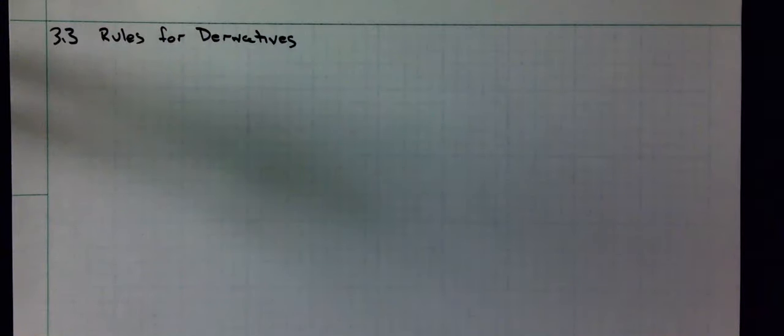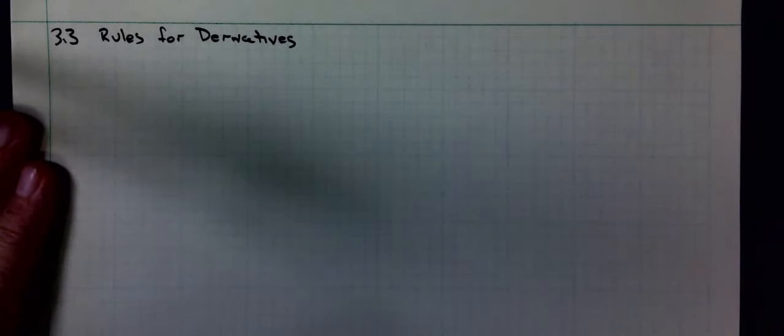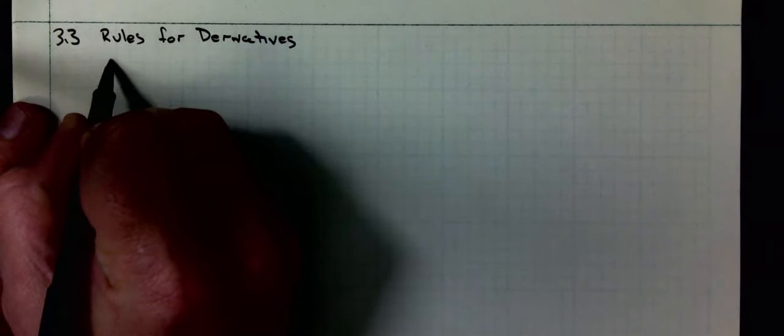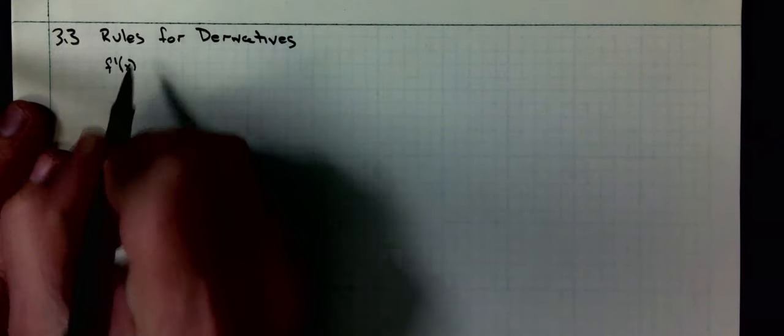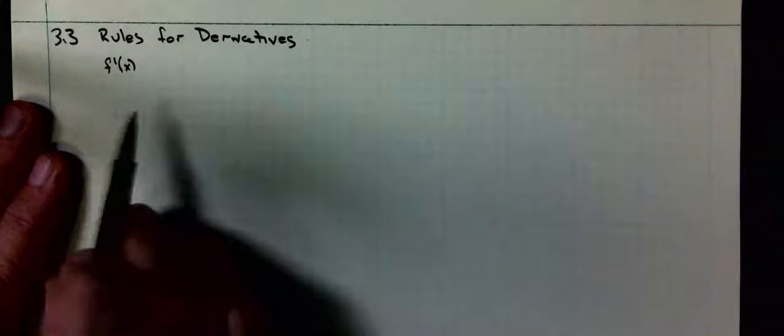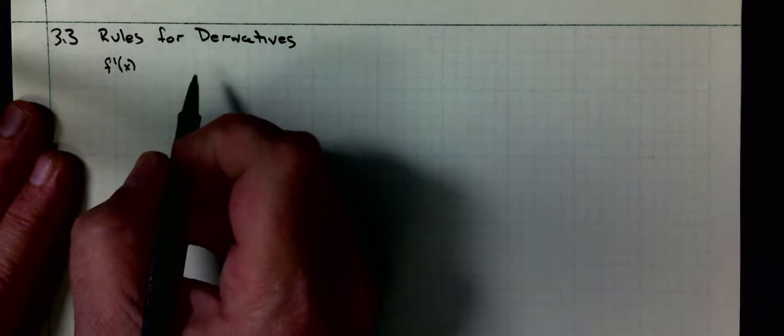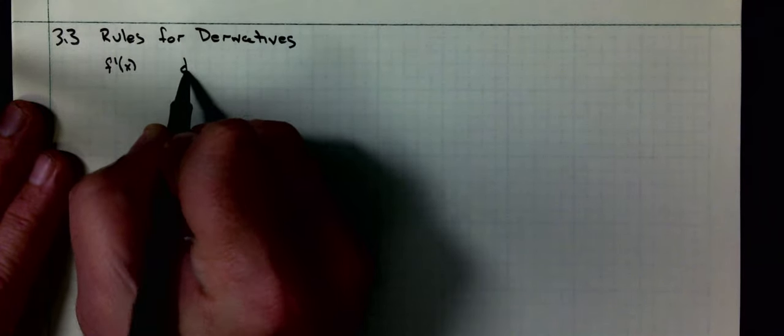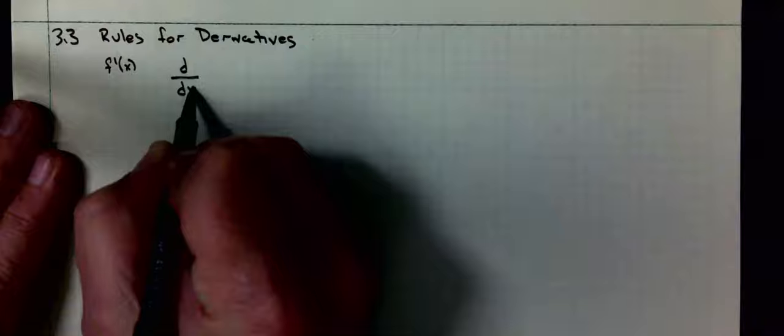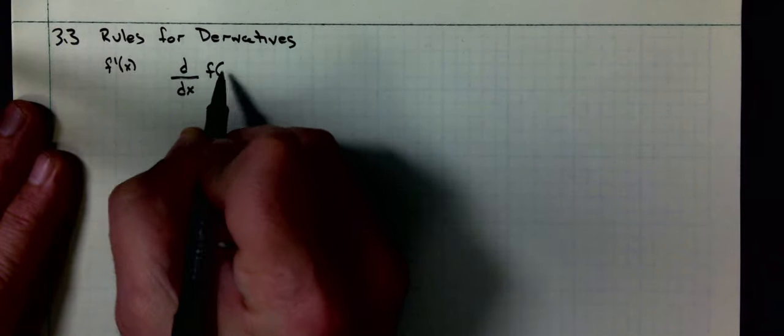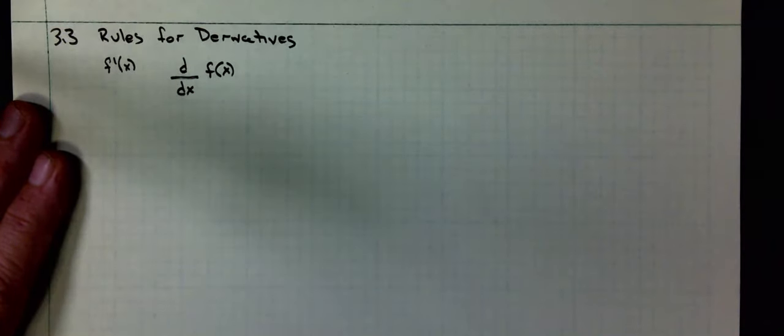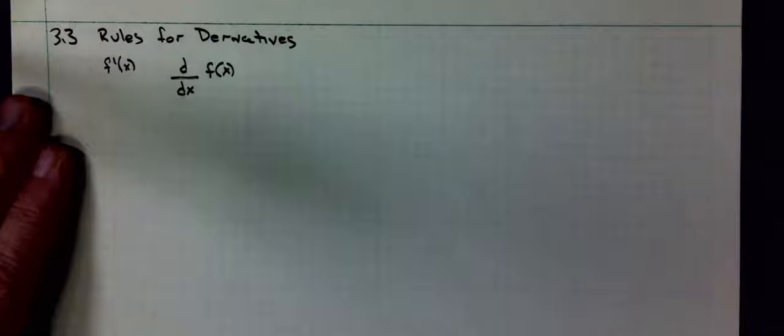This is what you've all been waiting for. These are our shortcuts for our derivatives. We've been writing f prime of x as the derivative of f of x. Another way we could write it is d over dx of f.